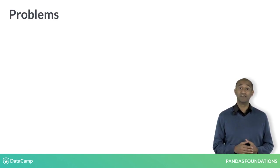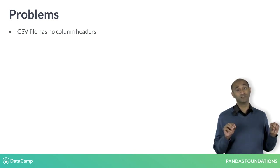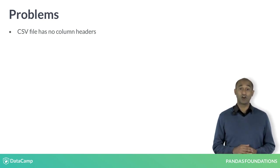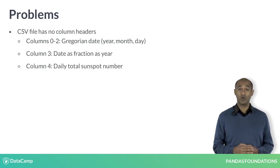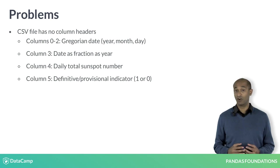First, the CSV file does not provide column labels in a header row. The column meanings can be gleaned from CILSO's website. Columns 0 through 2 give the Gregorian date. Column 3 is a decimal value of the date. Column 4 is the number of sunspots observed on that day. And column 5 indicates confidence in the measurement, 0 or 1.